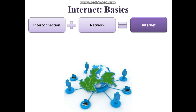The first topic is Internet Basics. You can see a diagram over here where you can see a globe and computers, and many human beings are connected. As the name suggests, where does this word Internet come from? Internet comes from two words: Interconnection and Network. Basically, Internet is interconnection of networks — networks of different kinds of computers that are interconnected so that human beings can share resources among each other.